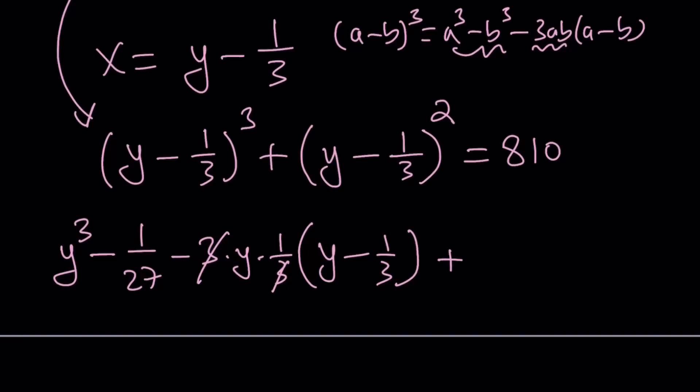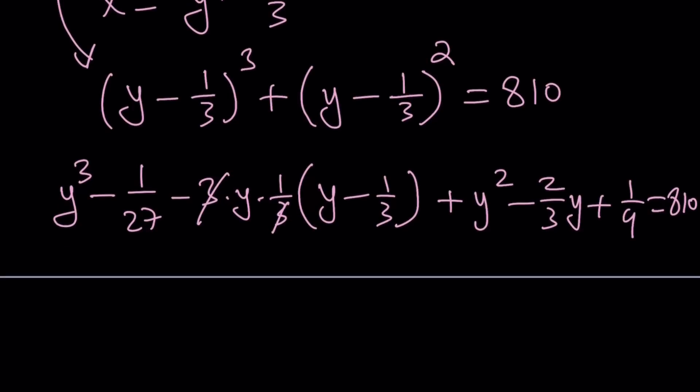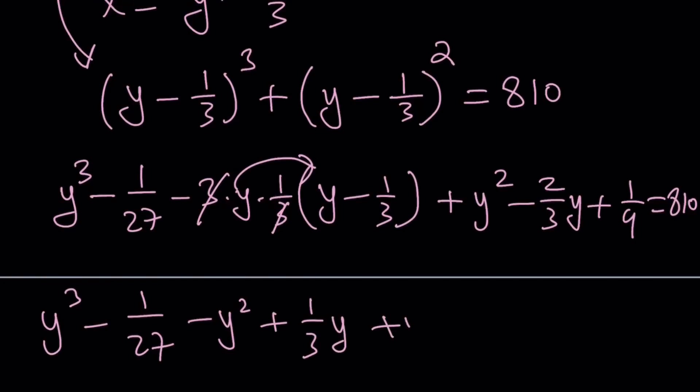y cubed minus 1 over 27 minus - now notice that 3 times y times 1 third is just going to be - times a minus b. The 3s are going to cancel out. That's the cube part. Plus a minus b squared: y squared minus 2 over 3y plus 1 ninth equals 810.